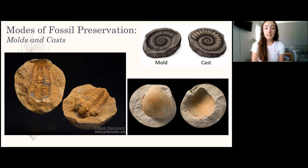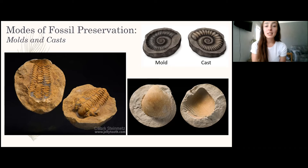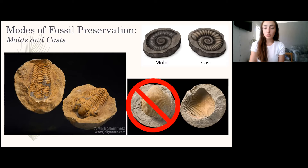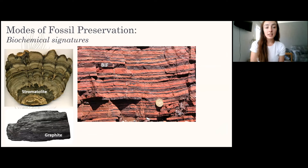Molds are the impression of the fossil and casts are the refilled mold. On this slide there's a trick: on the left you can see a trilobite mold and cast, but on the right is actually a real fossil alongside a mold of that fossil — it is not a cast because it hasn't been refilled by sediment. The shell material is still there, and the one to the right of it is the mold, just an impression.